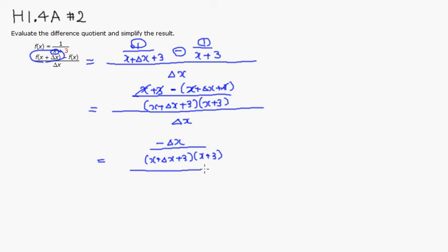So we can just divide the whole thing by delta x. Then you can see that there's delta x on top, and delta x on the bottom, so you can cancel out. So you're going to get negative 1 on top.